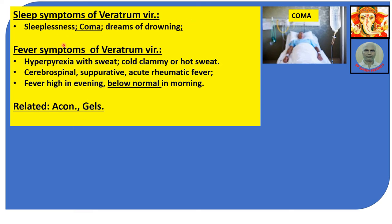Sleep symptoms of Veratrum Viride: sleeplessness, coma, dreams of drowning. Coma means the patient is in deep unconsciousness. Unconsciousness is of two types: stupor (light) and coma (deep). Differentiated by shining light in the eye — in coma, the pupil will not contract and remains fixed; in stupor, the pupil will respond to light.